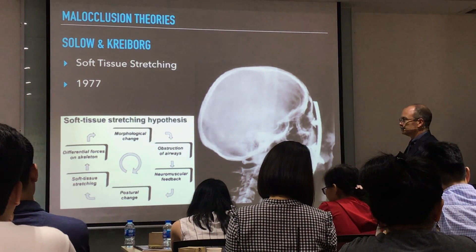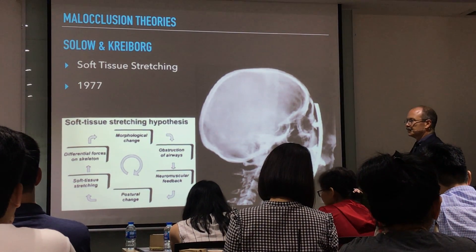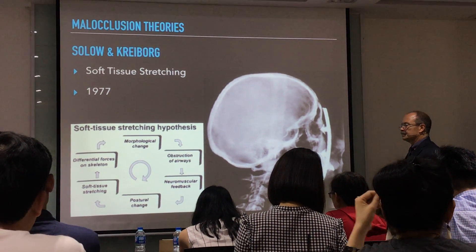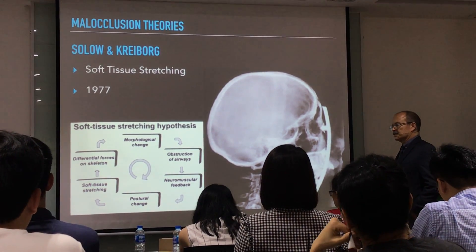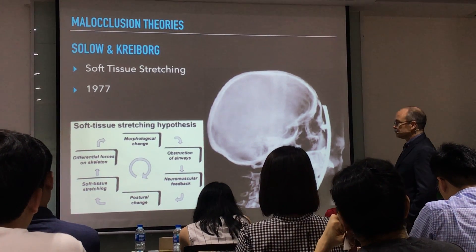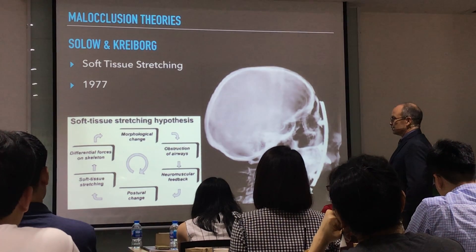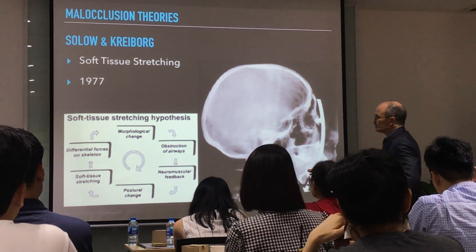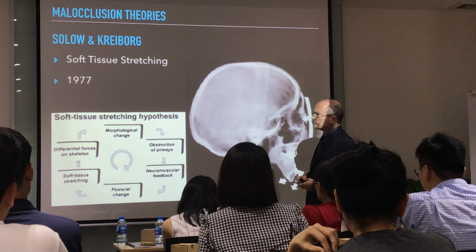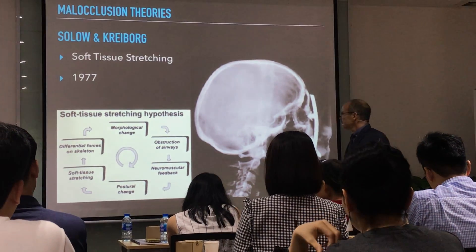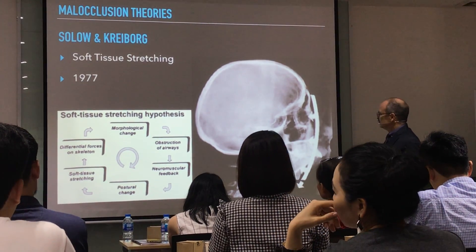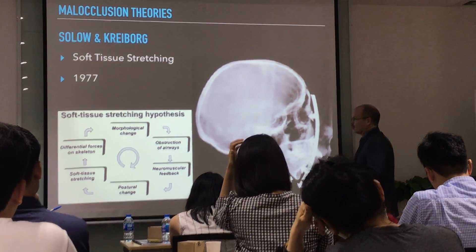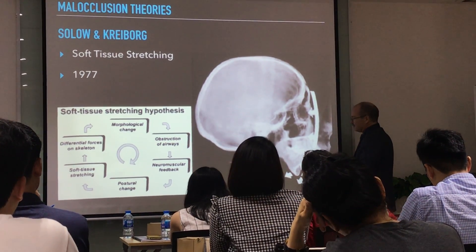In the presence of obstruction of the airway, if you cannot breathe, your brain makes a signal — a neuromuscular feedback. And you open your mouth. You have a postural change. You have to open your mouth in order to breathe.